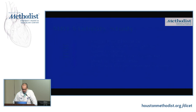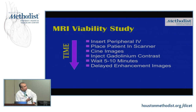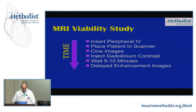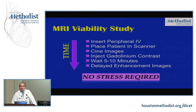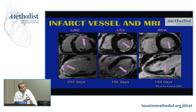The procedure requires a peripheral IV; the patient enters the scanner and we acquire a set of cine images to look at contractile function and chamber size. We then inject gadolinium contrast, wait about five to ten minutes, and perform our delayed enhancement MRI images. Notably, no stress agent is required to perform this technique.